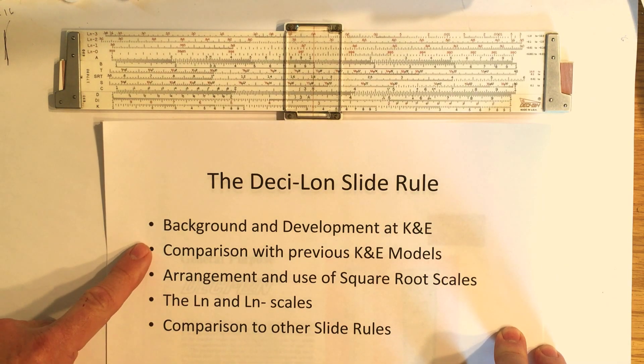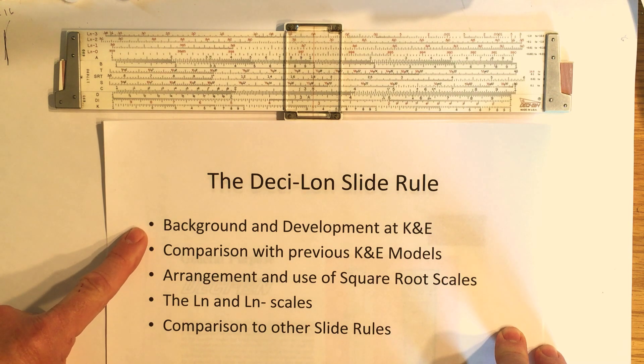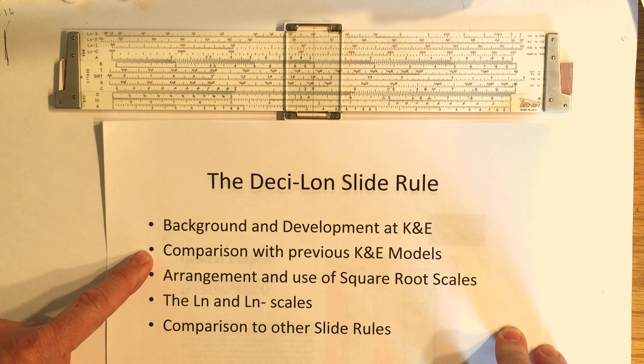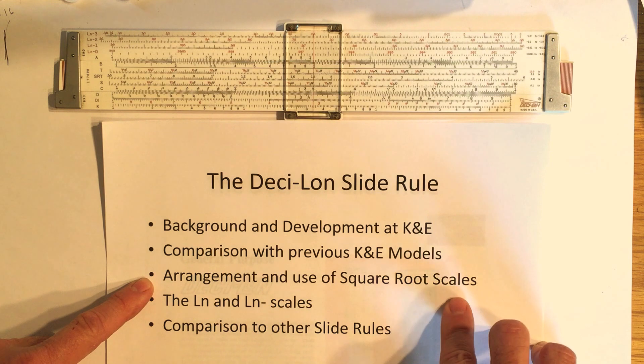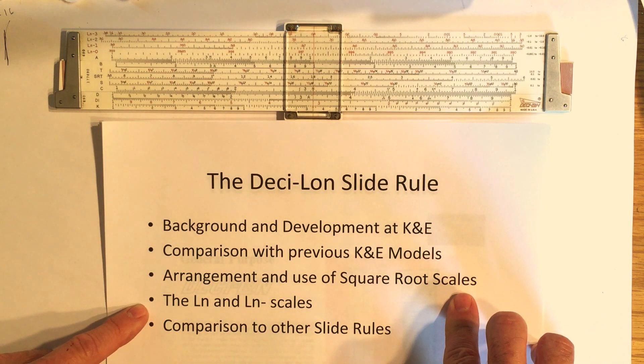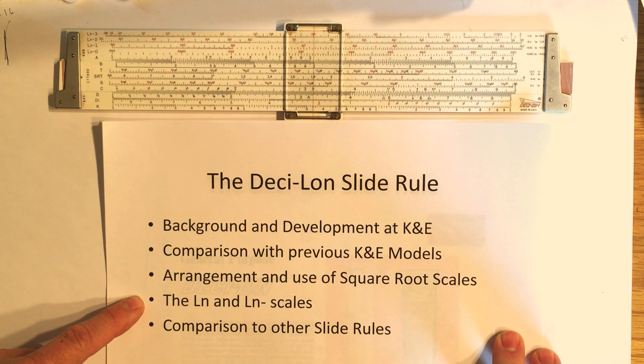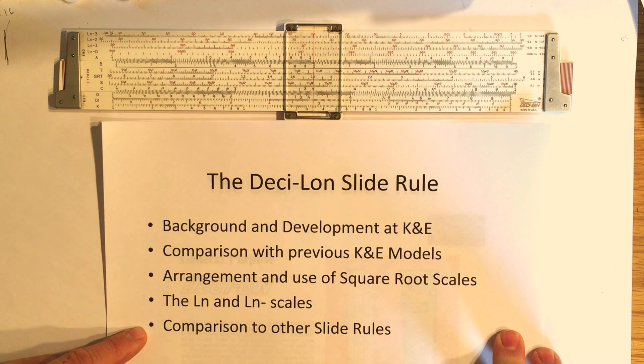Just a quick outline here. First I'll give a background of K&E and how they developed slide rules over the years. Second, I'll look at comparison with their previous models. I'll look at some of the arrangements of the scales, specifically the square root scales which were added to this model and the unusual arrangement of the log scales, both the log and reciprocal log scales, and then a quick comparison to other slide rules that were competitors to this K&E Deci-Lon slide rule.